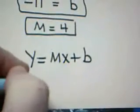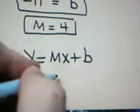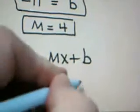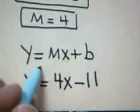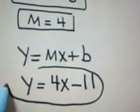m is 4 and b is negative 11. Therefore, our answer is y equals 4x minus 11. This is the equation of my line.